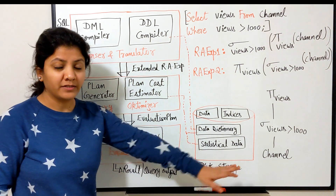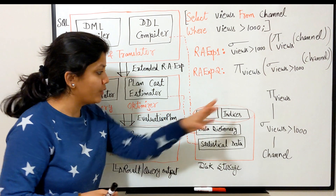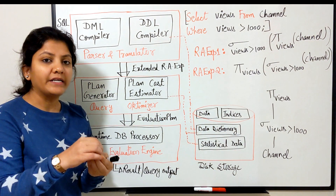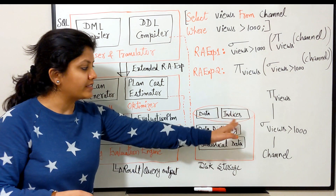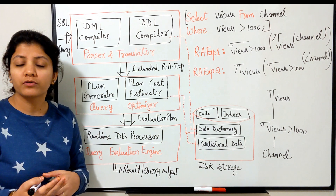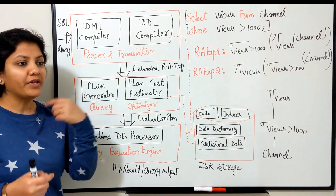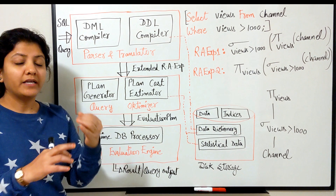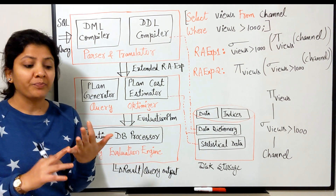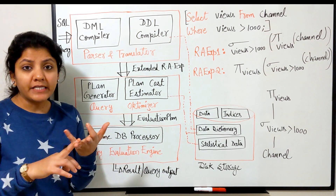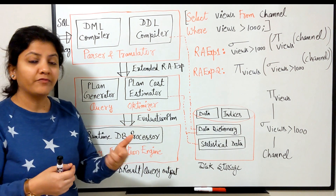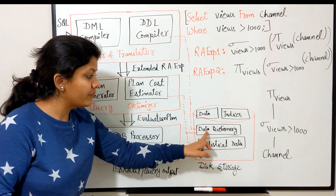Along with this, we have disk storage — the secondary memory, the hard disk where all data is stored. We have data files where you actually store the data and relations. Then you have index files — whatever indexes and tables have been created, all index files are stored here. Then we have the data dictionary. In simple terms, the data dictionary is data about data, which we also call metadata or system catalog. If I have two tables — one for student and one for faculty — then information about these tables, such as how many attributes they have, the types of attributes, file structure, file name, and indexes created upon them — all this information is stored in the data dictionary.